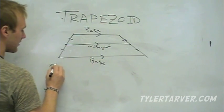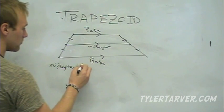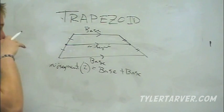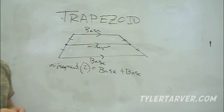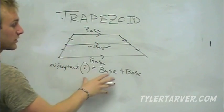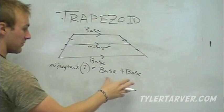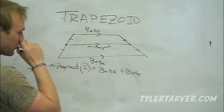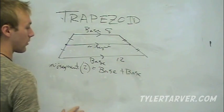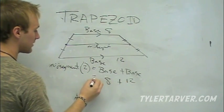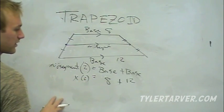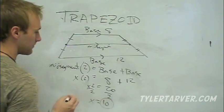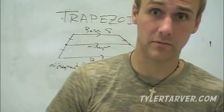The formula is: the mid-segment times two equals base one plus base two. If you add the two bases together, it equals twice the mid-segment. For example, if one base is eight and the other is twelve, plug them in: 2x = 8 + 12, so 2x = 20, divide by two, and the mid-segment is ten.